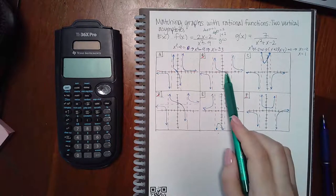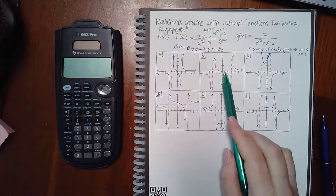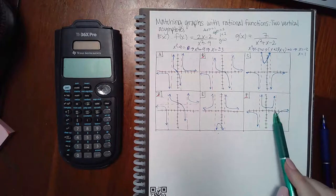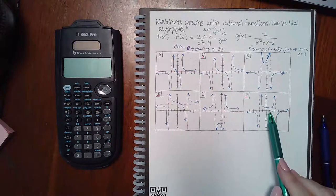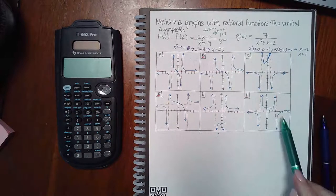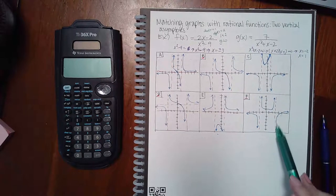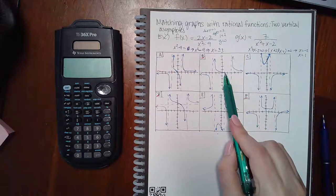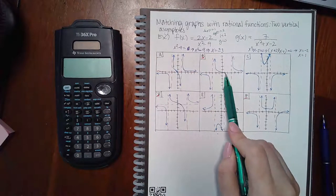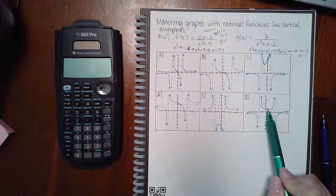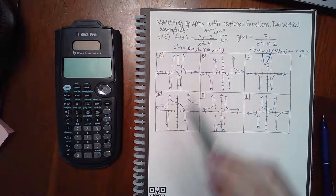To distinguish between B and F, if I plug in a number in a certain region and get zero or negative it points to one; if positive it points to the other. Let's plug in x = 1 — we need to end up with zero for B or a positive value for F.